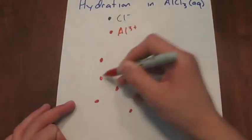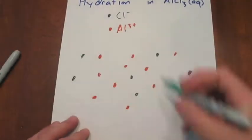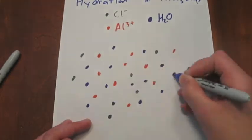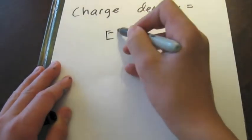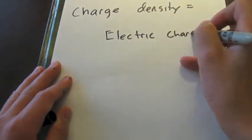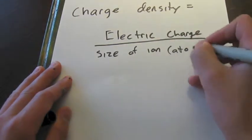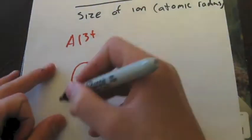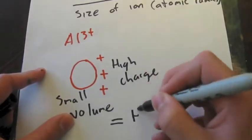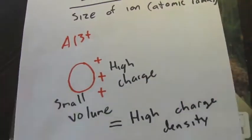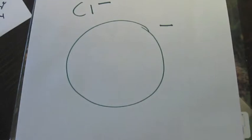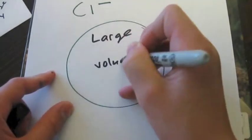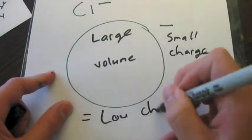Hydrates form because dissolved ions carry charges. The likelihood of an ion being hydrated depends on its charge density, or the ratio of its electric charge to its size. If an ion is relatively small and has a relatively high charge, then it has a high charge density. On the other hand, if an ion is large but has a small charge, then it has a low charge density.